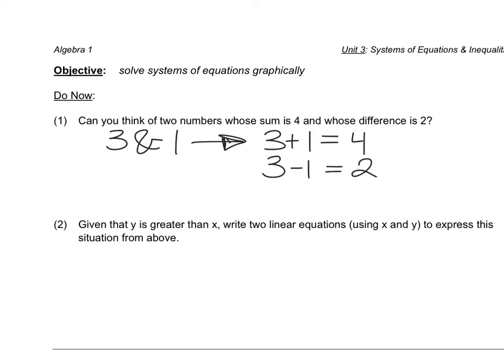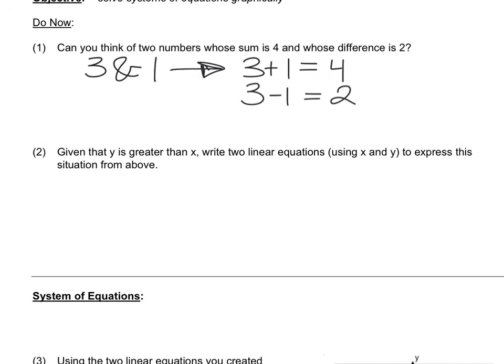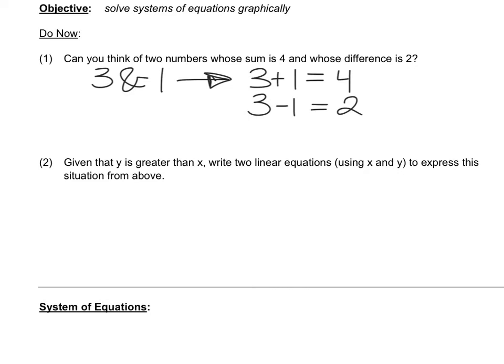So the first one's a little easier, the second one is a little bit kookier. Alright, so given that y is greater than x, the bigger number is obviously the y value. Write two linear equations using x and y to express this situation from above. So, what do we think?